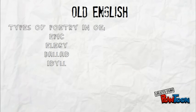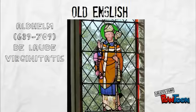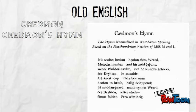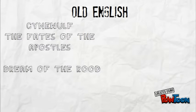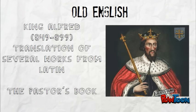Most of the literary works during the Old English period were written by unknown or anonymous authors. Still, there are a few names. For example, Altham, one of whose works was the Laude Virgine Tatis, a writing about the saints in Latin. Caedmon, with his hymn, known as the most complicated known textual history of any surviving Anglo-Saxon poem. Cynewulf, with The Faith of the Apostles as one of his works, and Alfred, or King Alfred, also known as Alfred the Great, with his translations from Latin, including the Pastoral Book.